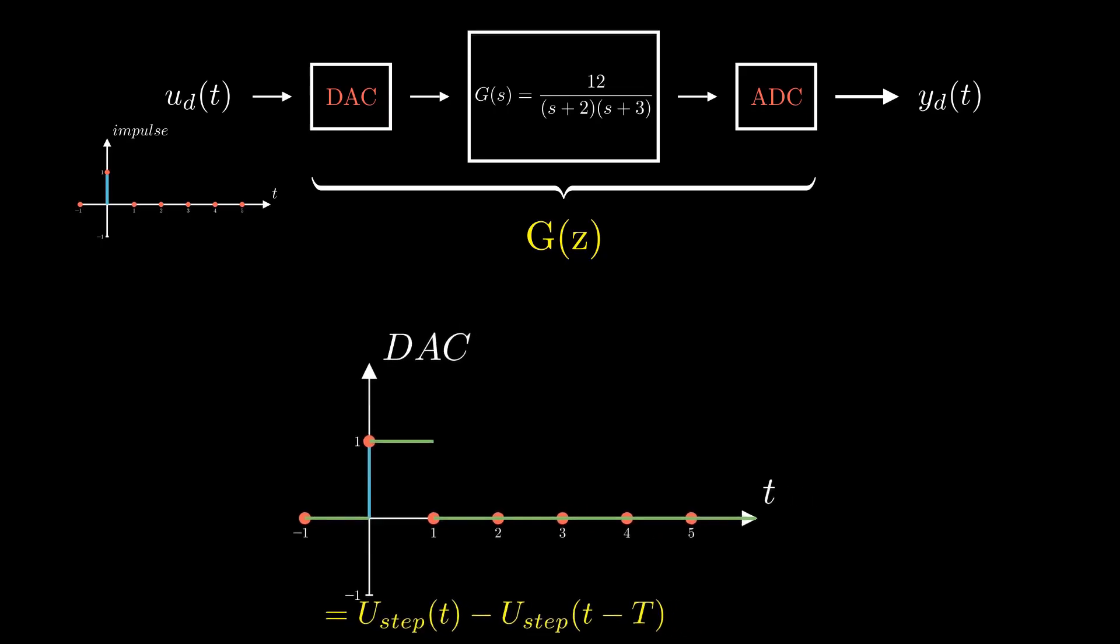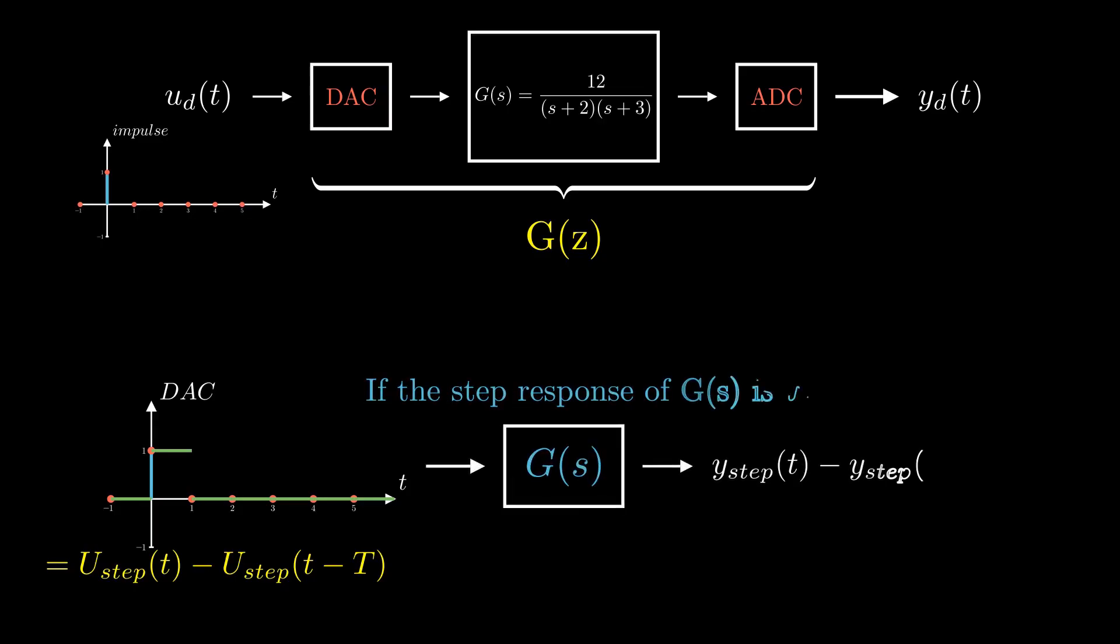When this signal is fed into our analog plant G(s), and if the step response of G(s) is y_step(t), according to properties of linear time invariant systems, the output of G(s) would be y_step(t) minus y_step(t minus T).